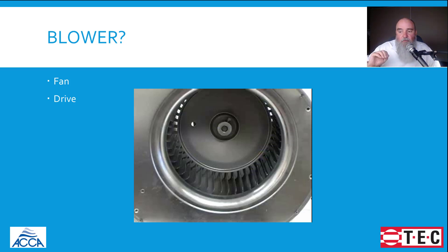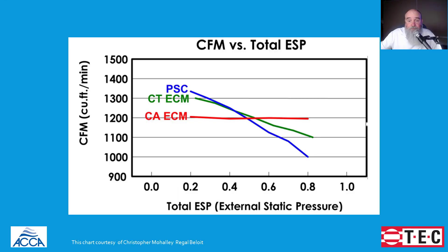I want to stick to some basic information in this video and cover some rules of thumb, some misnomers, or maybe a little bit of both. First, we're going to talk about what kinds of blowers or drives are available to us. Modern furnaces, modern air handlers: we have the standard induction motors, permanent split capacitor motors — they're in our rearview mirror, they're just not a thing anymore. The DOE made a rule change in the summer of 2019, and motors had to get more efficient. Luckily, we had ECM, or electronically commutated motor technology, available to us.